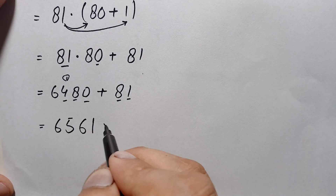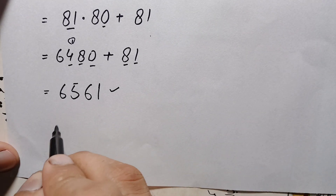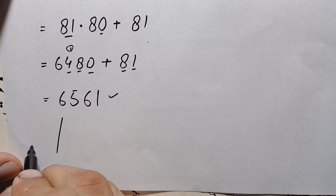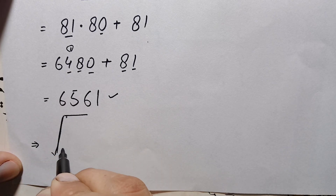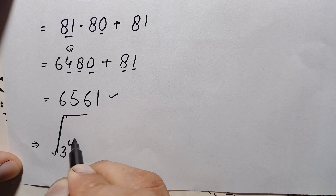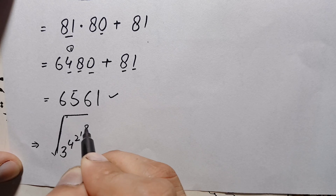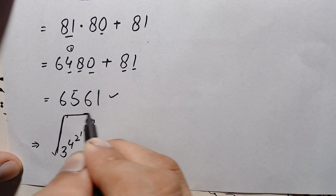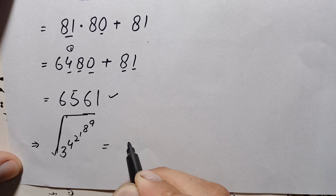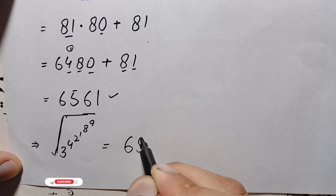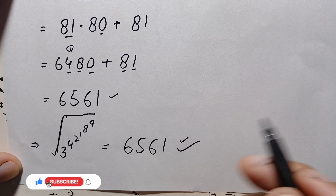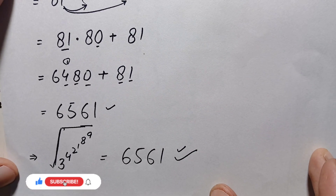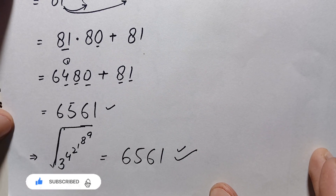So finally, the whole square root of 3 raised to power 4, raised to power 2, raised to power 1, raised to power 8, raised to power 9 equals 6561. This is our final answer. Don't forget to subscribe to the YouTube channel for more interesting math videos. Thanks for watching.